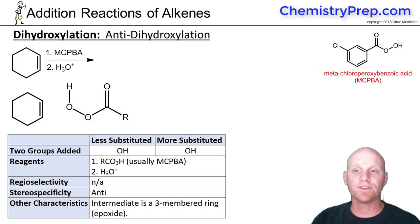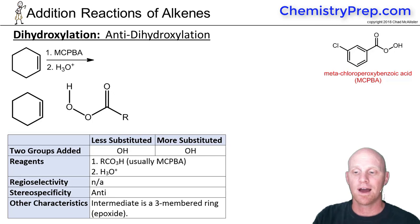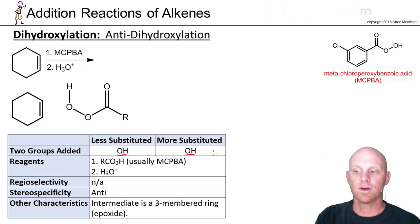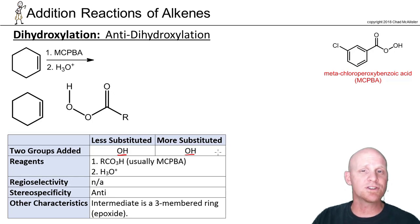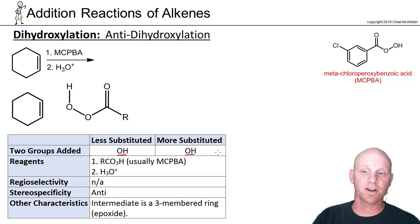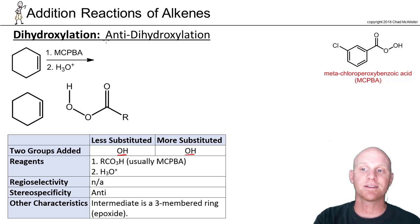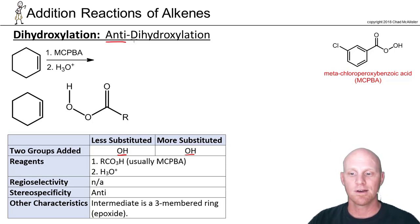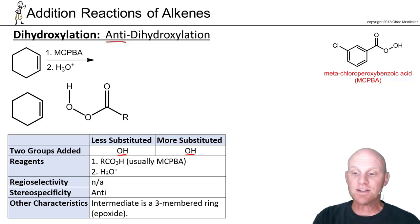The next addition reaction is called dihydroxylation. We're going to add a hydroxyl group to both sides of the alkene. Since we're adding two of the same thing, we have no regioselectivity to talk about — they both get an OH. It turns out we can do this in both syn and anti fashion. We're going to start with anti-dihydroxylation, so it's an anti addition — that's the stereospecificity.